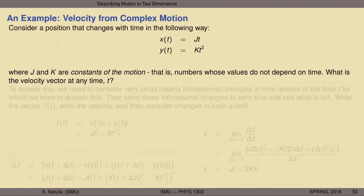Let's take a look at an example of applying calculus to a specific functional form for the vector r as a function of time. Consider a position that changes with time as follows: the x-coordinate is given by x(t) = j·t, and the y-coordinate is given by y(t) = k·t², where t is time. Here j and k are merely constants of the motion — numbers whose values do not depend on time. Whatever j is at time zero, it is the same value at any later time.